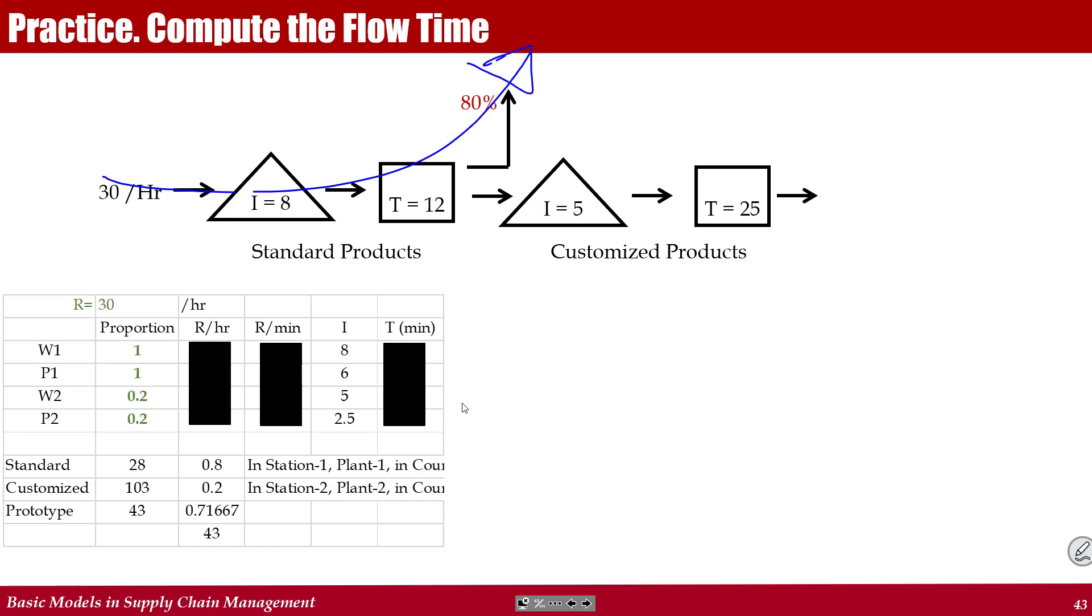We want to compute flow time of standard products and flow time of the customized products and flow time of a combination of these two, an aggregate product. So if we multiply these percentages by this total incoming, we will get these numbers. 100% times 30 is 30. 20% times 30 is 6. Therefore, 30 comes here, 30 here. And then 6 minus 30, which is 24, will go out. And 6 will come here.